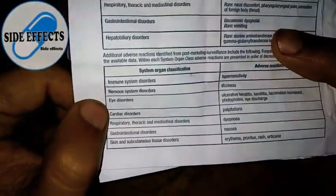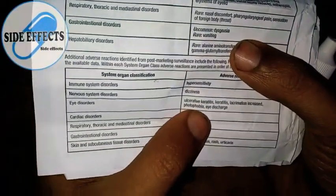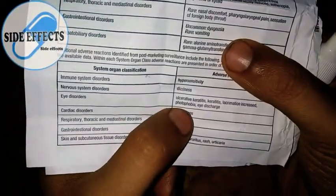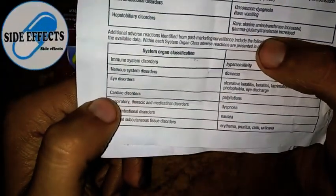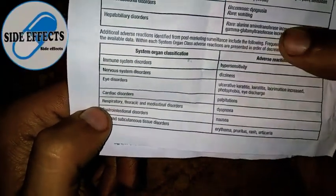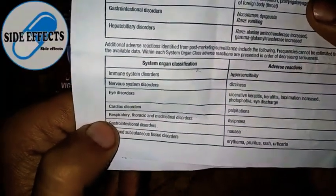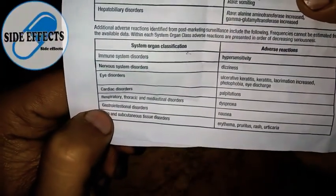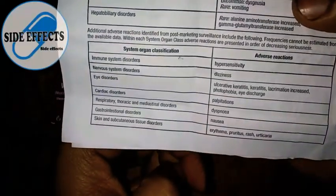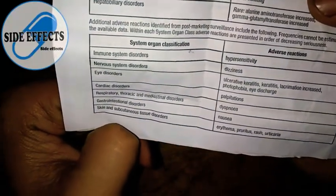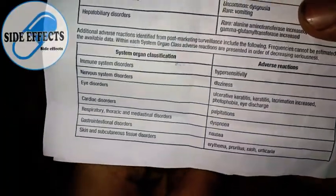As it is an eye drop, it will have more side effects on the eye, with more local effect and less systemic effect. It can cause ulcerative keratitis, increased lacrimation, photophobia — which is sensitivity to light — and eye discharge. It can also have cardiac disorders like palpitations, respiratory thoracic and mediastinal disorder causing dyspnea, gastrointestinal disorder causing nausea, and skin reactions including pruritus, rashes, and urticaria.